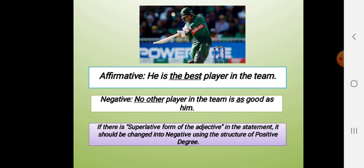Now you see this one: 'He is the best player in the team.' You see the negative form: 'No other player in the team is as good as him.'